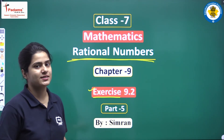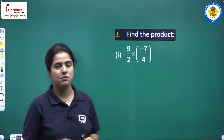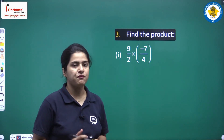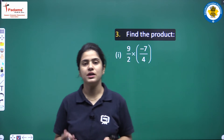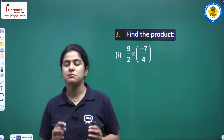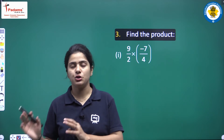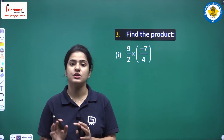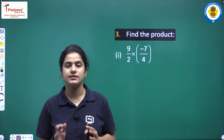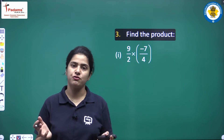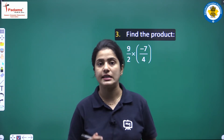What is the third question of this exercise, students? Find the product. You have to multiply. If you want to multiply two rational numbers, if you are multiplying any integer, you need to multiply that integer with the numerator keeping the denominator as it is. And if you are multiplying two rational numbers together, then the product of numerators upon the product of denominators is the result.